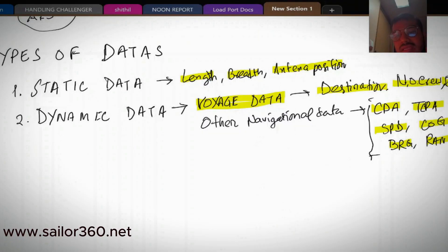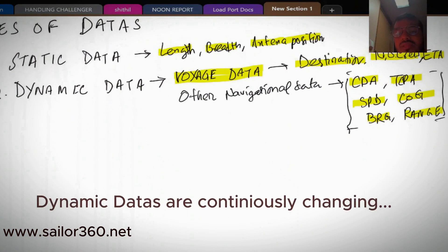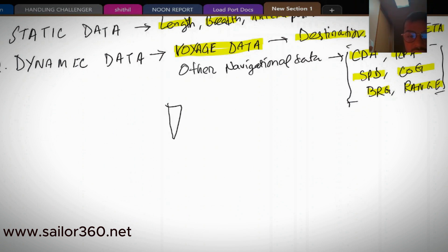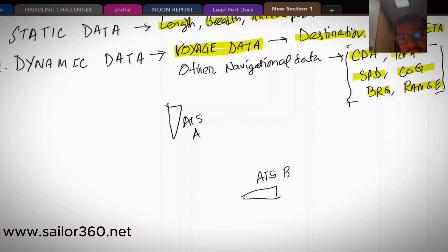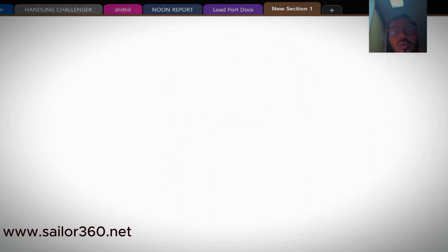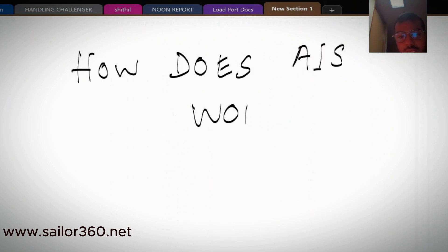These data are continuously changing with respect to each other. Your vessel has AIS A, and another vessel has AIS B. AIS A and AIS B will exchange information — from here you can see that vessel's data, and from there they can see your data.